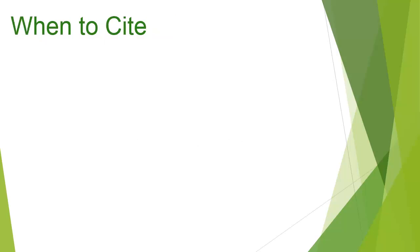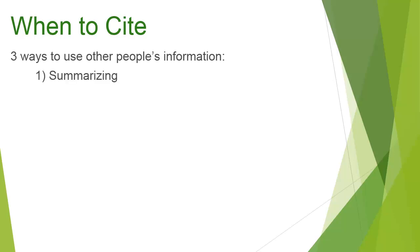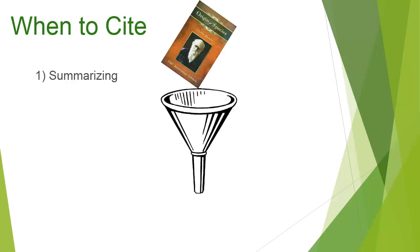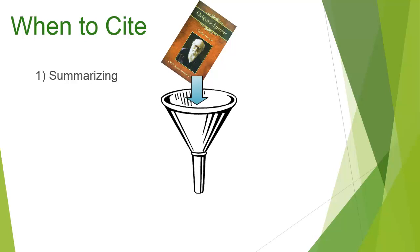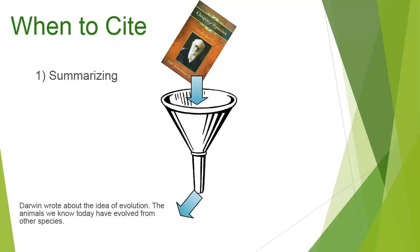Now let's talk about when you need to cite. There are three ways to use other people's information in your paper: first is summarizing, second is paraphrasing, and the third is quoting. Summarizing is a way to condense a lot of background information into a smaller amount of text in your own words. An article abstract is an example of a summary.